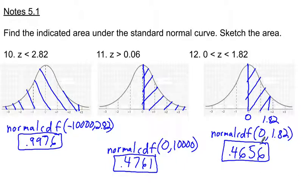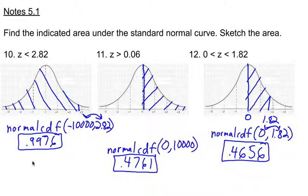One last note: when typing values into the calculator, it is important that the numbers are entered from least to greatest. If you ever switch the order — whether using two z-scores or one of the negative 10,000 or positive 10,000 approximations — you will get a negative area. Since we're talking about area and probability, we definitely don't want a negative number, so always type the least number first and the greatest number second.